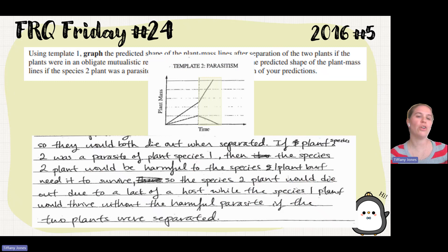So a student got the point for their graph. They said if plant species 2 was a parasite of plant species 1, the species 2 plant would be harmful to the species 1 plant but needed to survive. So the species 2 plant would die out due to the lack of a host, while the species 1 plant would thrive without the harmful parasite if the two plants were separated.